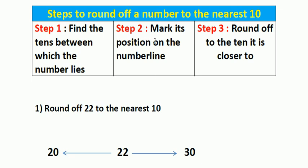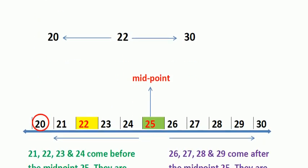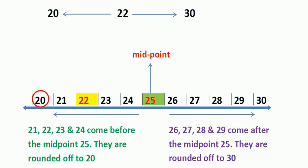Step 2 is to mark its position on the number line. We have to mark the position of 22 on the number line. Here I mark the position of the number 22 on the number line. The number 22 is before the midpoint 25.